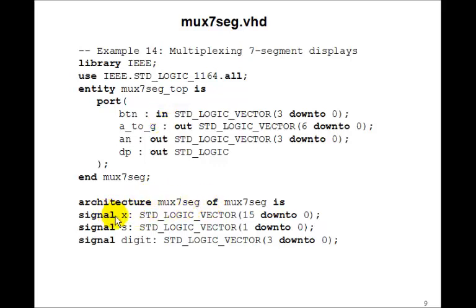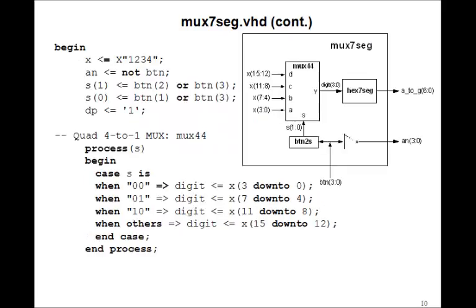So here's the architecture. We need a signal X, 15 down to 0. And that's going to be the input to the multiplexer. And we need a signal S, 1 down to 0. That's also an input to the multiplexer. And then digit is this 4-bit signal that we have. It's the output of the multiplexer and the input to the 7-segment decoder. So here's our little program. We're going to set X to 1, 2, 3, 4. We'll just fix the hex value 1, 2, 3, 4. So there's a 1, 2, 3, 4 going to be coming in here. We'll have to connect these. And then AN is the output. Well, that's just not button. So we can say AN is not button, where button's the input here. And then this signal, S1 and S0, we figured that out. Those were just button 2 or button 3. And S0 is just button 1 or button 3. And DP will set to 1 to turn off the decimal points.